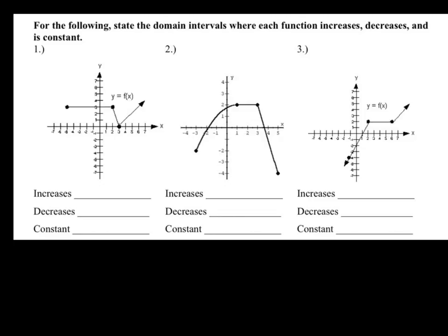So for our three examples, it says, state the domain intervals where each function either increases, decreases, or is constant. Now remember, domain intervals are left to right because it's your x values.